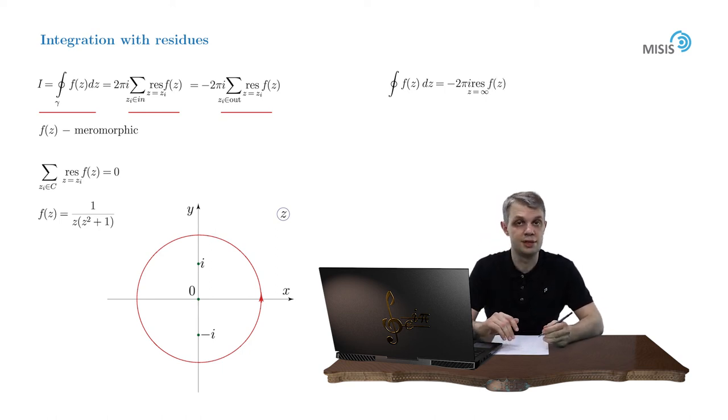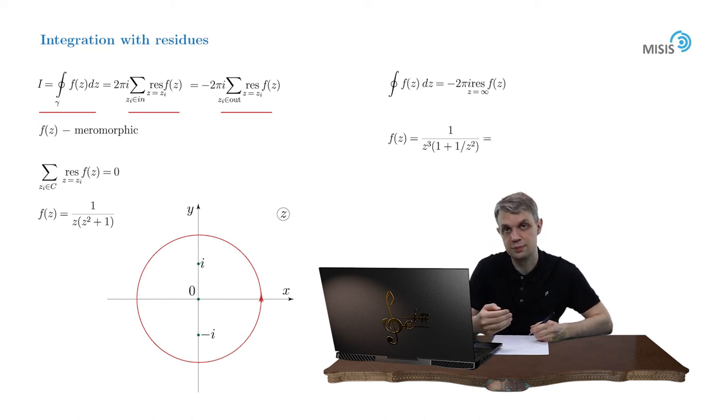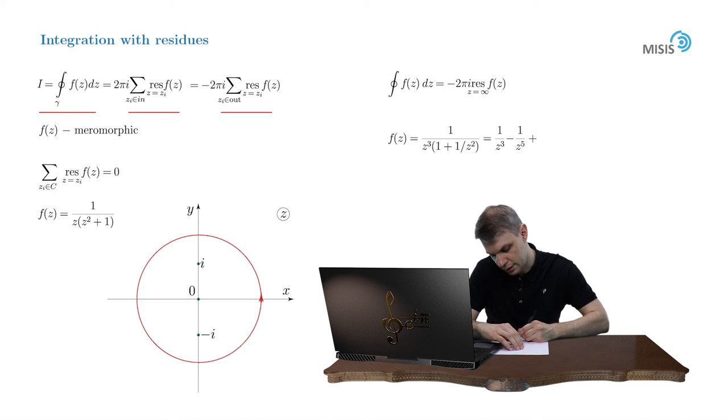So let's build a Laurent expansion of our function at infinity. So it basically corresponds to the expansion in powers of 1/z. To do so we treat 1/z as a small parameter and expand in it. So f(z) is equal to 1/z and we factor out z² from the braces to obtain z³ times (1 + 1/z²), and treating 1/z² as a small parameter we make a geometric expansion to obtain 1/z³ minus 1/z^5 and plus so on.